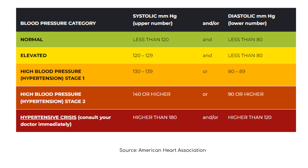Elevated blood pressure is a systolic pressure of 120 to 129 and a diastolic pressure of less than 80. Stage 1 hypertension is a systolic pressure of 130 to 139 or a diastolic pressure of 80 to 89. Stage 2 hypertension is a systolic pressure of 140 or higher or a diastolic pressure of 90 or higher.